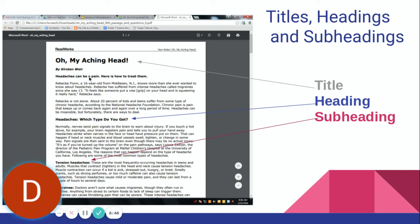So under headaches can be a pain, here's how to treat them. These two paragraphs are going to tell us how to treat a migraine. So it tells us what information we're going to be reading. The same here with headaches, which type do you get? That tells us the different types of headaches and that they're going to talk about it in that section.